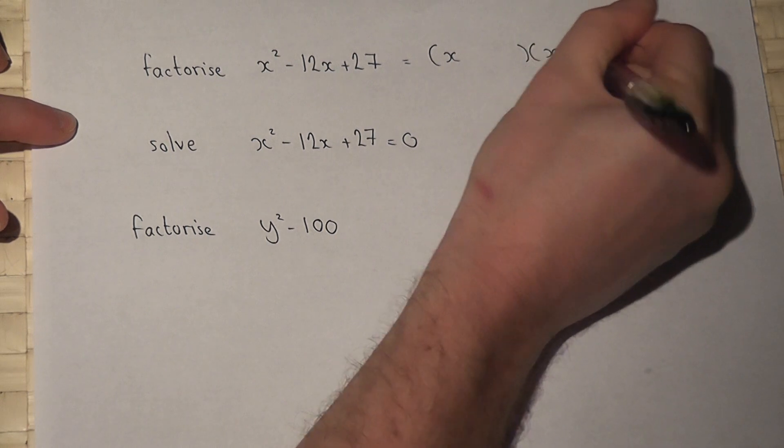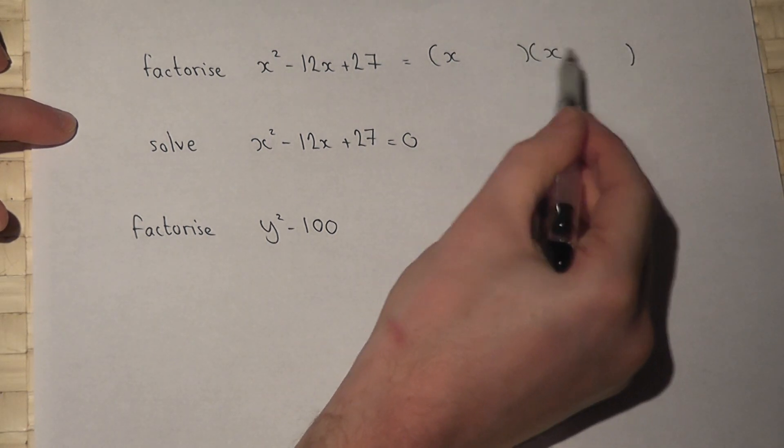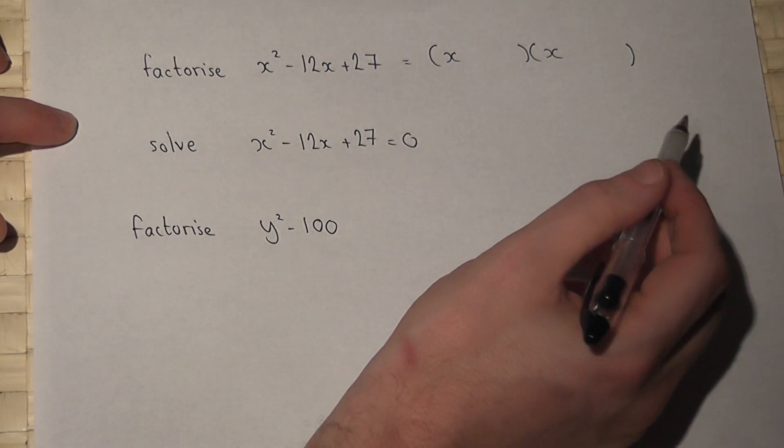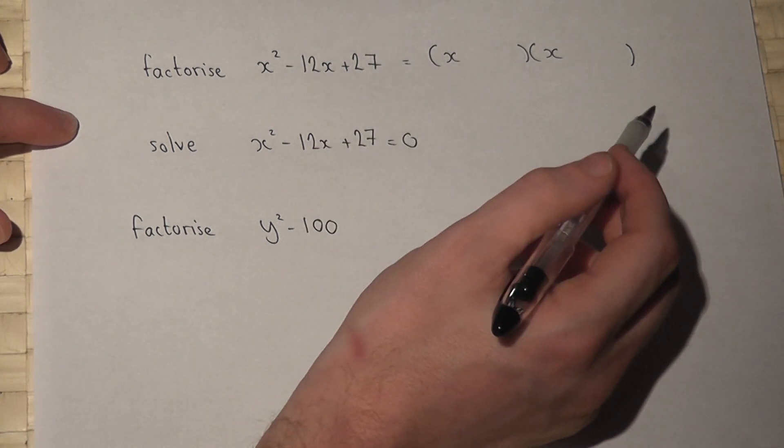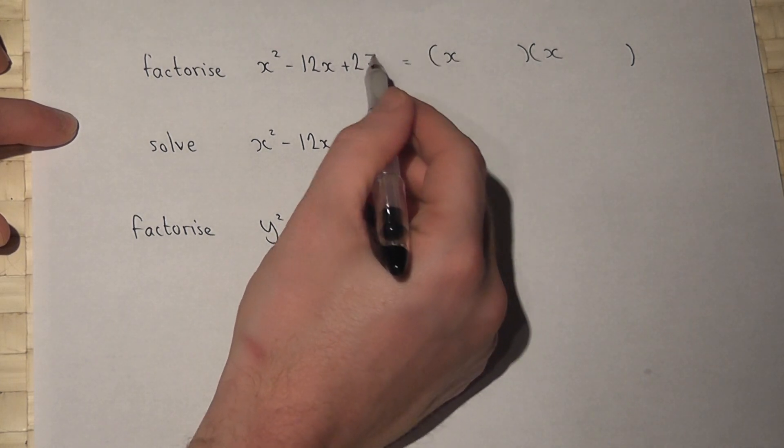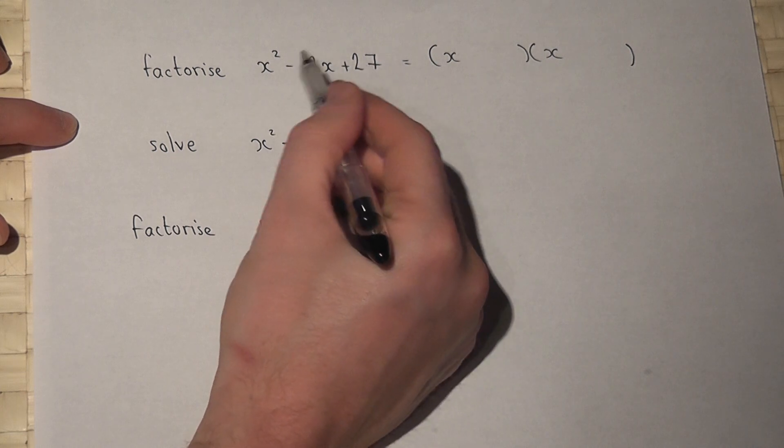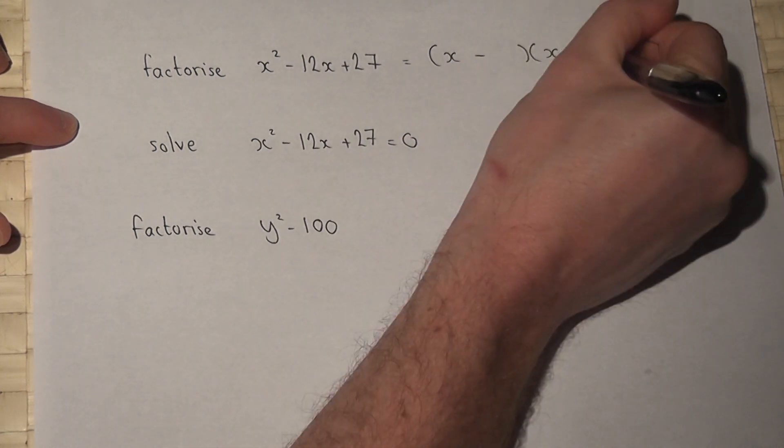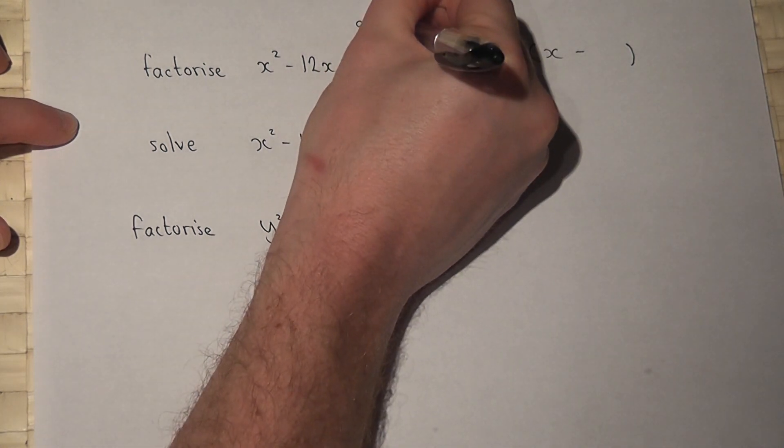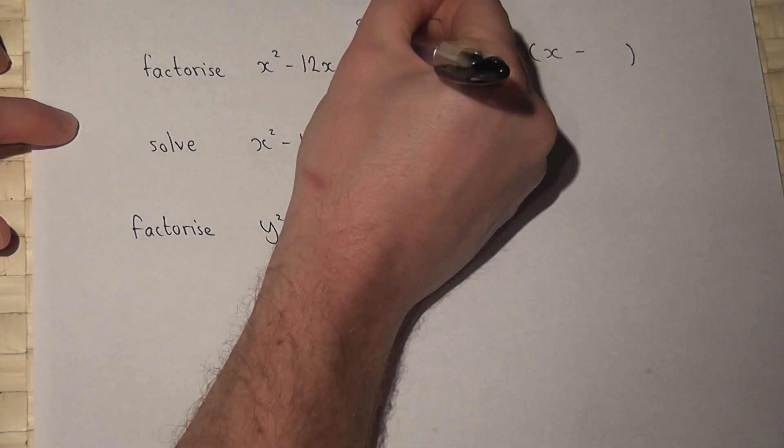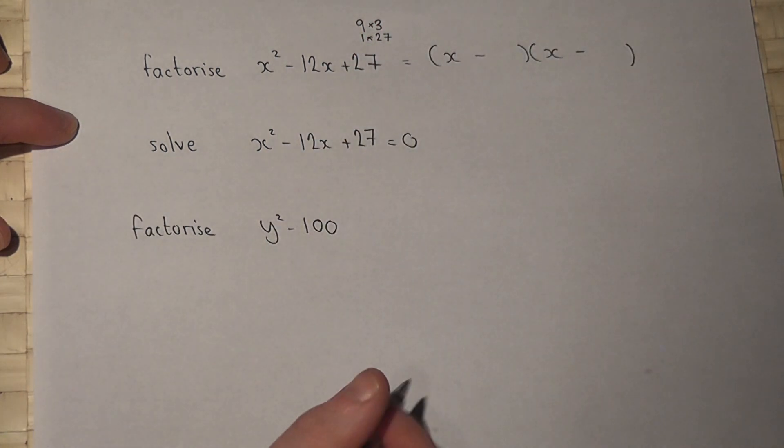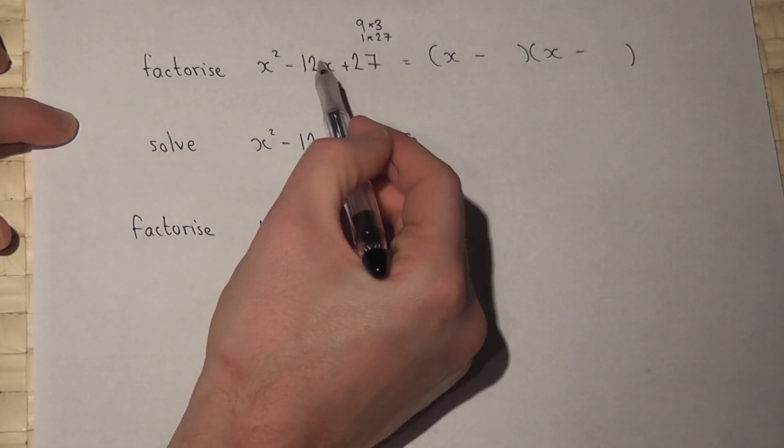The two numbers in the brackets must multiply to make 27 but must add to make -12. If they multiply to make a positive number but add to make a negative number, they must both be negative. The factors of 27 are 9 and 3, or 1 and 27. Since 9 + 3 = 12, if we put -9 and -3...